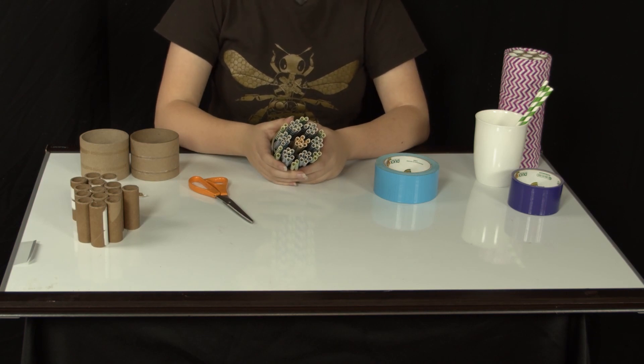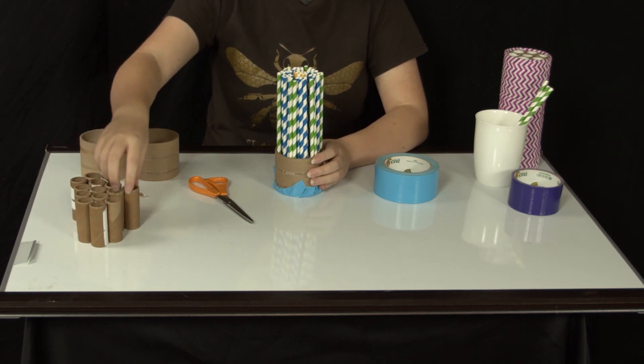After all your straws have been placed, we can start building the rest of the box. Stack the next two layers of inner tubes.